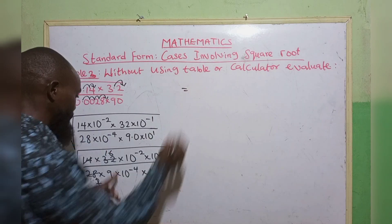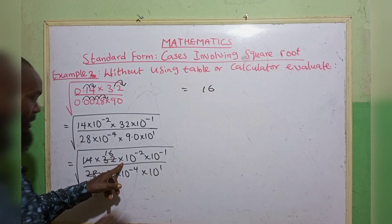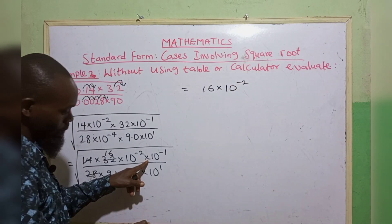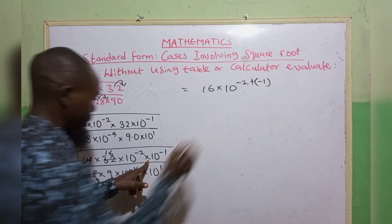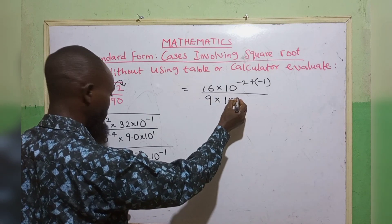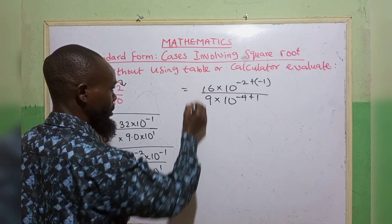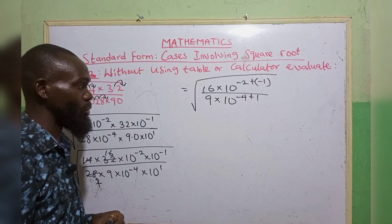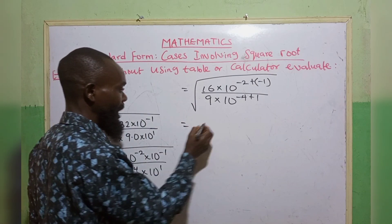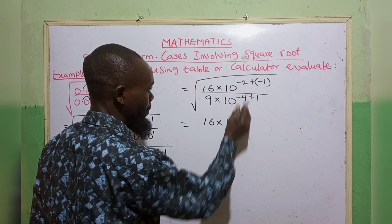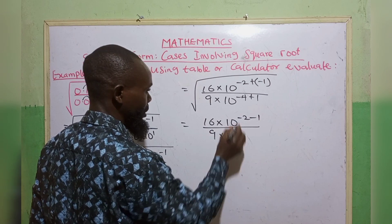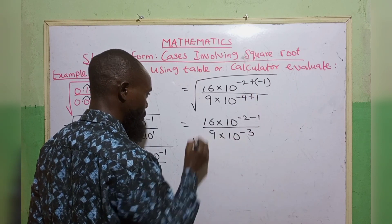Working through the simplification: the numerical parts give 16 in the numerator. Combining the powers of 10 in the numerator: minus 2 plus minus 1 gives minus 3, so we have 16 times 10 raised to the power of minus 3. In the denominator we have 9 times 10 raised to the power of minus 4 plus 1, which is minus 3. So we have 16 times 10 raised to the power of minus 3 over 9 times 10 raised to the power of minus 3, all under the square root. The powers of 10 cancel.